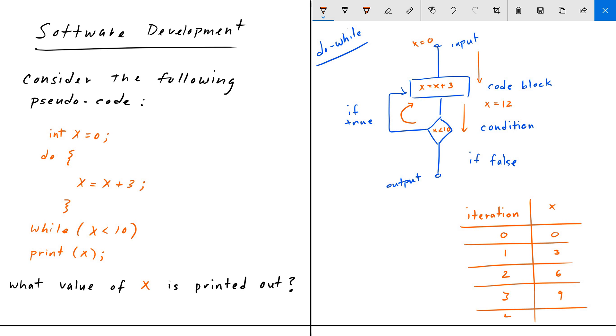X is equal to 12. Is 12 less than 10? No, it's not. The condition is false. Therefore, we drop down finally to the bottom. And then X is equal to 12. So that is our answer.